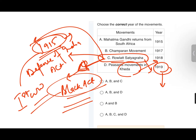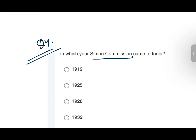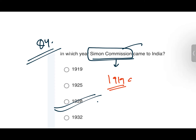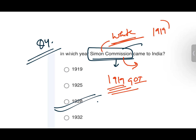Question number four: In which year did the Simon Commission come to India? This date you absolutely must learn — the answer is 1928. The Simon Commission came to India in 1928 to review the Government of India Act of 1919. It is also called the White Commission, and most importantly, there was no Indian delegate in it, so when it came to Mumbai it was boycotted.